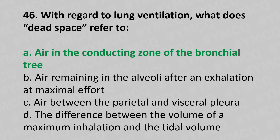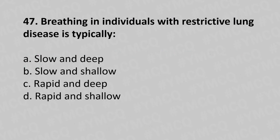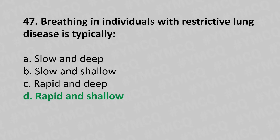Now let's move to question number 47. Breathing in individuals with resistive lung disease is typically. Option A: Slow and deep. Option B: Slow and shallow. Option C: Rapid and deep. Option D: Rapid and shallow. And the answer is Option D, rapid and shallow.